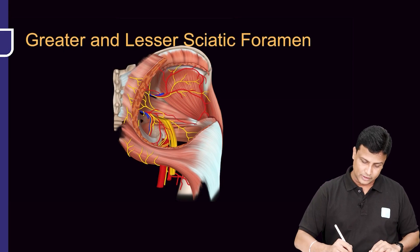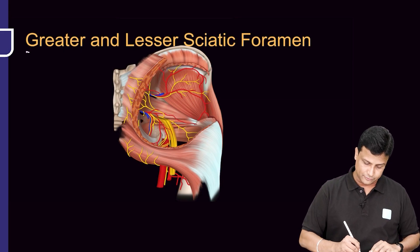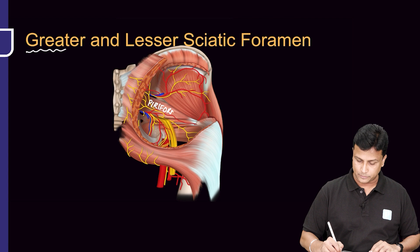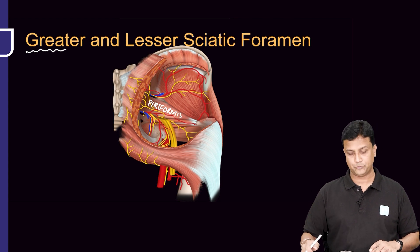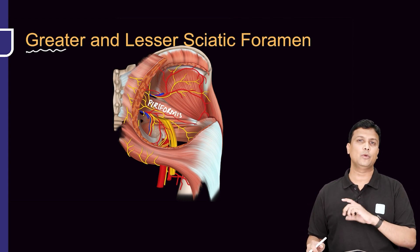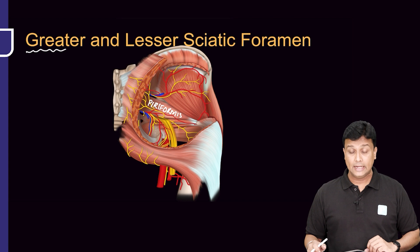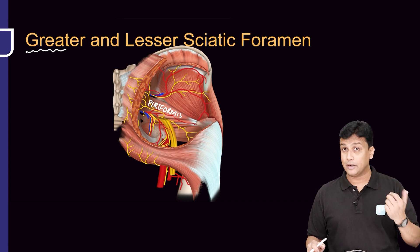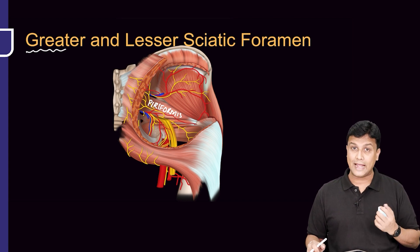Let me tell you about the greater sciatic foramen. There is a muscle coming out here — that is your piriformis muscle. From the greater sciatic foramen, which muscle is coming out? Piriformis. Now there are certain structures passing above the piriformis and there are certain structures passing below the piriformis.